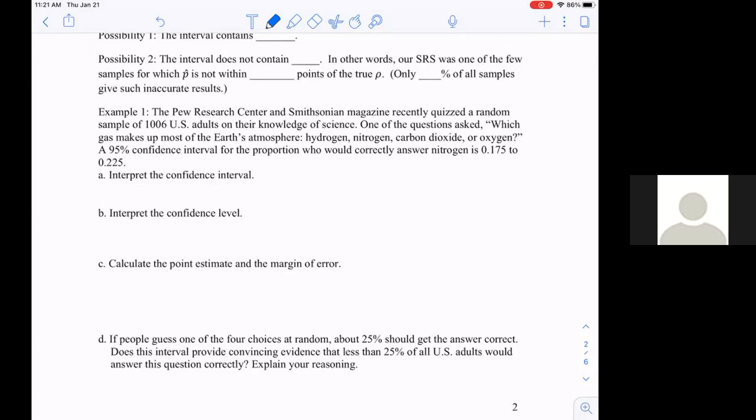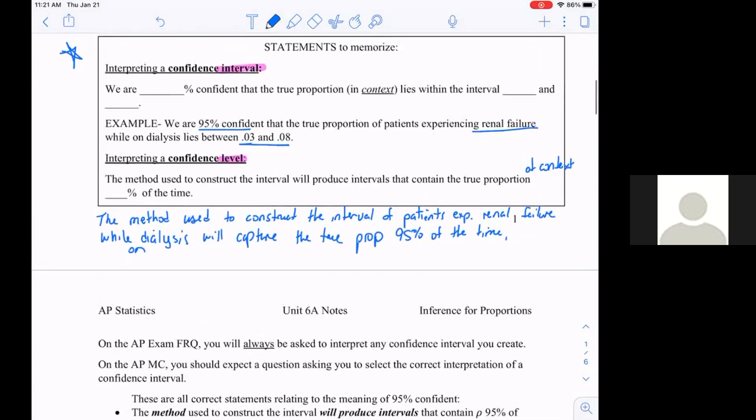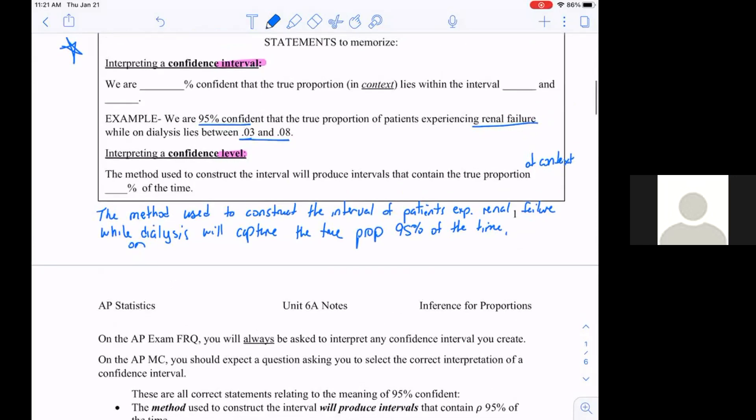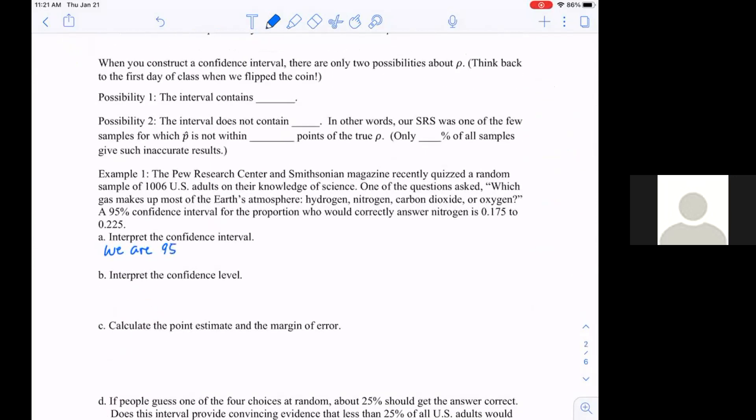The first two are going back to what we have to be able to do: interpret the confidence interval. We can go back and fill in the blank on that statement. We are 95 percent confident the true proportion of adults correctly answering nitrogen.